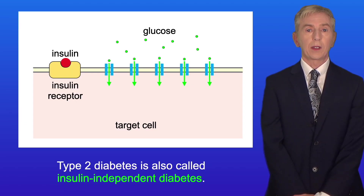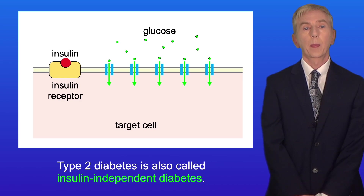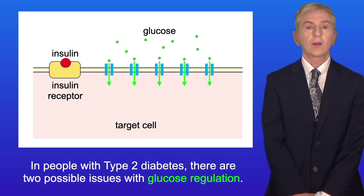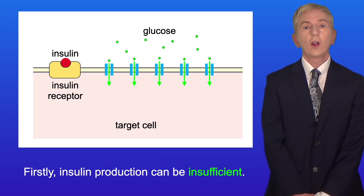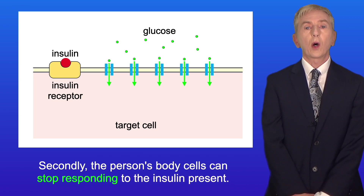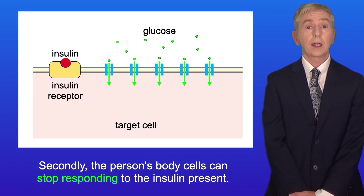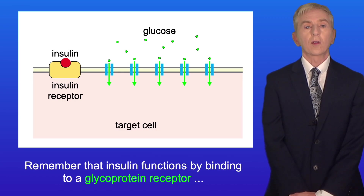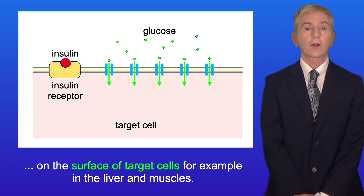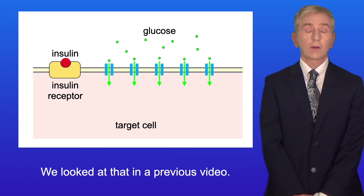Type 2 diabetes is also called insulin-independent diabetes. In people with type 2 diabetes, there are two possible issues with glucose regulation. Firstly, insulin production can be insufficient. And secondly, the person's body cells can stop responding to the insulin present. Remember that insulin functions by binding to a glycoprotein receptor on the surface of target cells, for example in the liver and muscles, as discussed in a previous video.